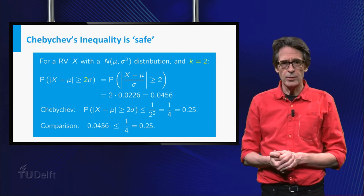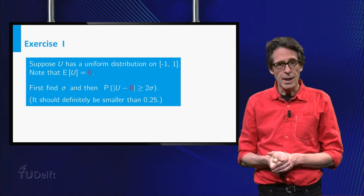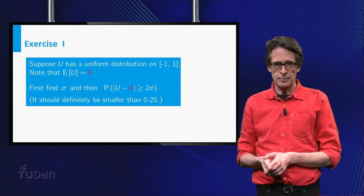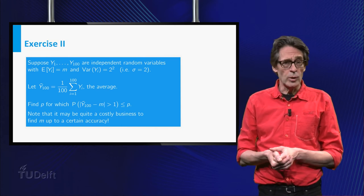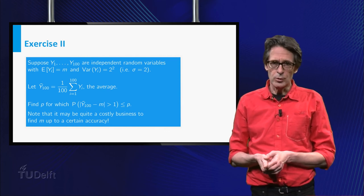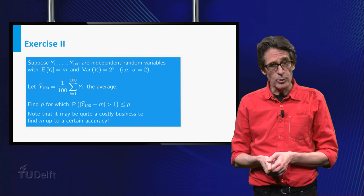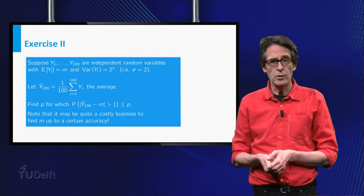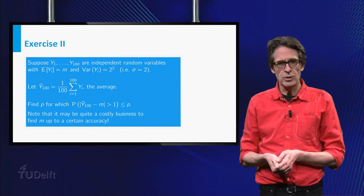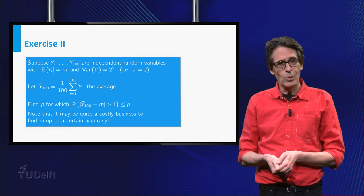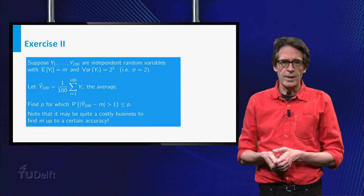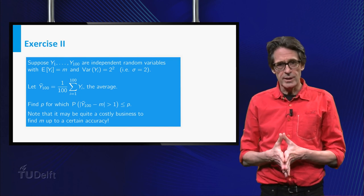To conclude, I recommend you to do the next two exercises. First, see how safe the rule of thumb is for k equals 2 for the uniform distribution on (-1,1). Second, once again return to the example we started with. Suppose the measurements of the melting point can be considered as independent random variables of which the expectations are equal to the true melting point m, and the standard deviation is 2 degrees. If Y is the average of 100 measurements, and you use Chebyshev's inequality, what is at most the probability that Y is off by more than 1 degree? Take your answers to the next class, where we will test you with feedback fruits.